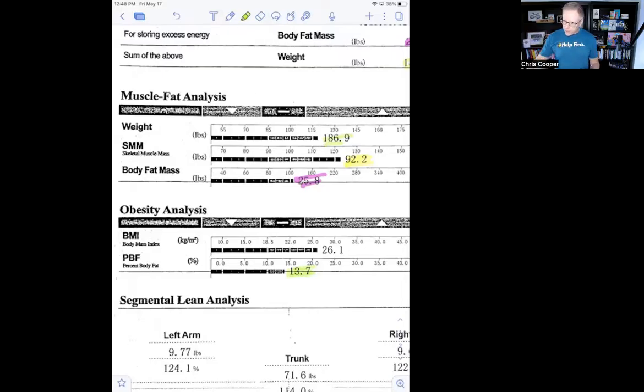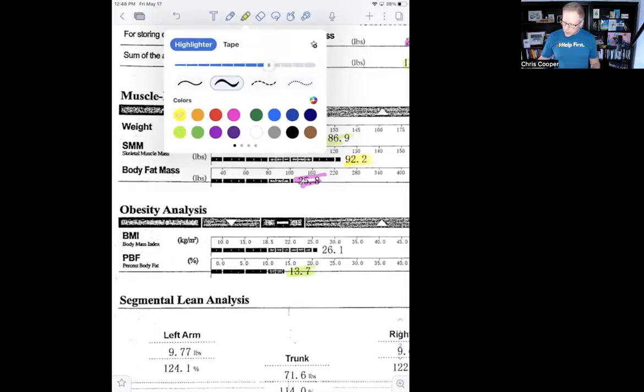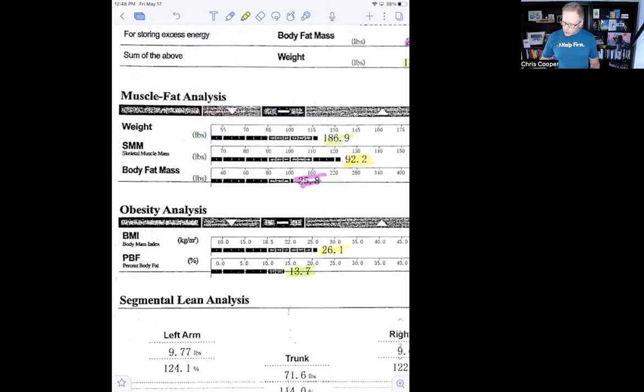However, if I look at the number above that, BMI is what most doctors would look at when they're trying to figure out my health risk. BMI is just basically height divided by weight. My BMI is 26.1.